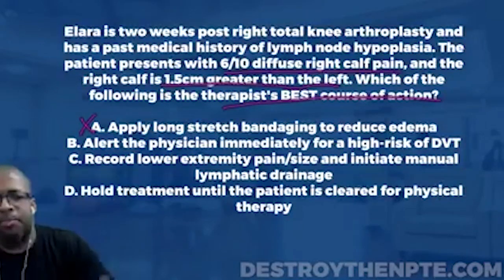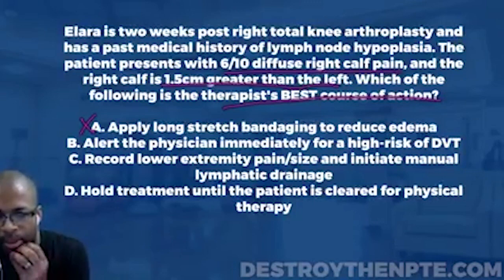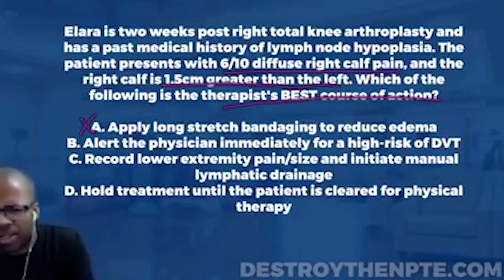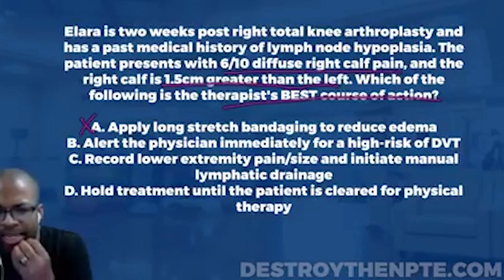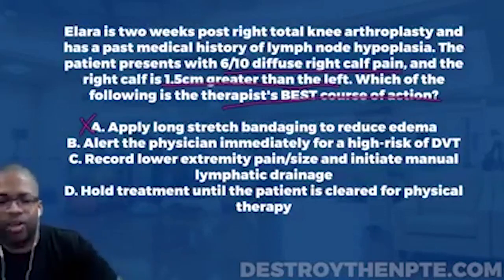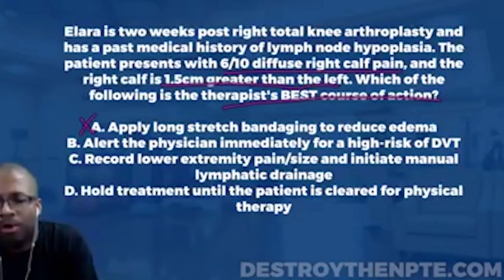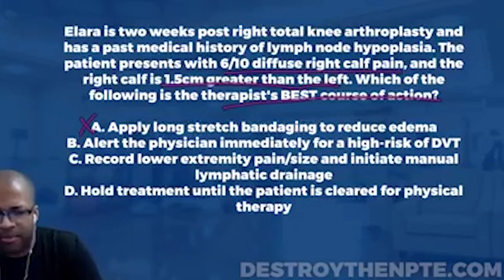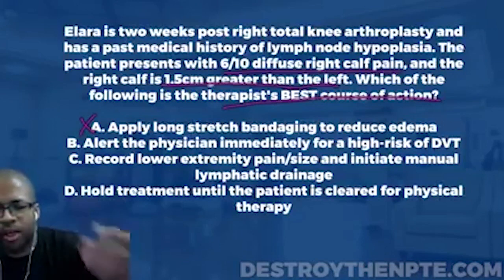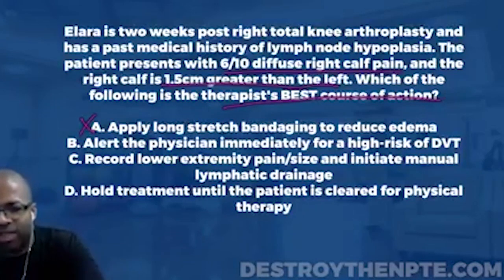Answer B says alert the physician immediately for a high risk of DVT. This is where one of those hidden secrets comes in: the clinical prediction rule. Specifically, the Wells Clinical Prediction Rule is a mathematical tool used to help diagnose, treat, and provide prognosis for patients — and it tells us whether a patient is at high risk for DVT.